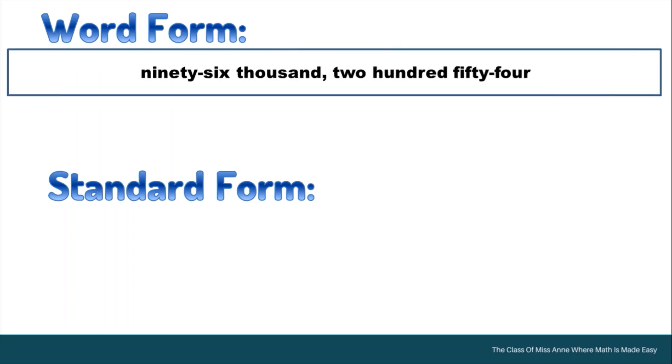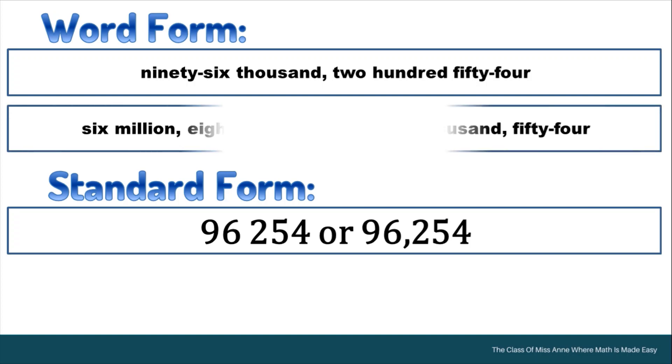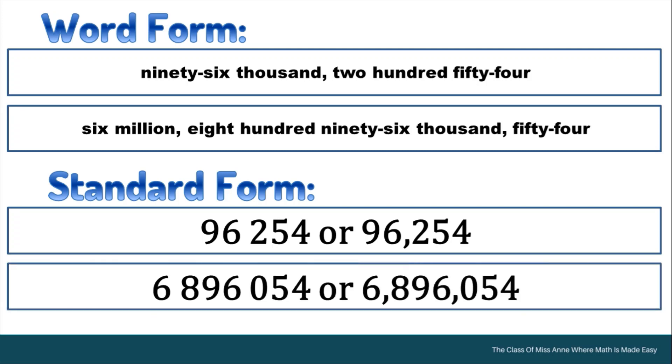How are we going to write the standard form of 96,254? There are two ways. We can write it as 96,254 or 96,254. How about 6,896,054? There are also two ways. We can write it as 6,896,054 or 6,896,054.